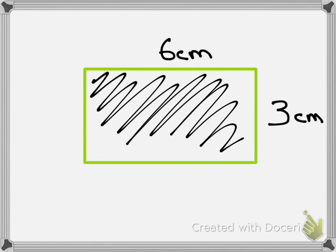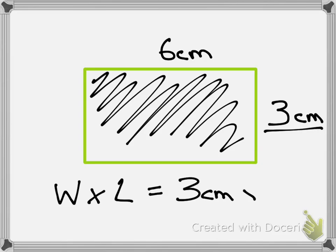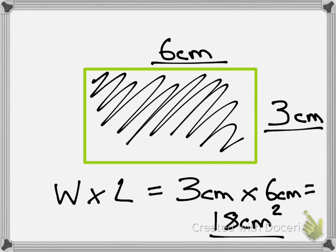Now to work out the area, you times the width and the length together. So the width on this occasion is 3cm, and the length is 6cm. So if you add both of those two together, you get 18cm. And because it's area, we must put this little squared sign. So 18cm squared.